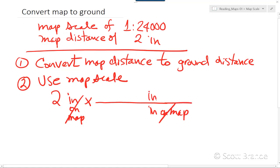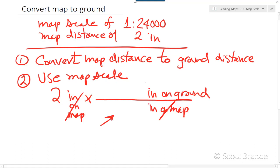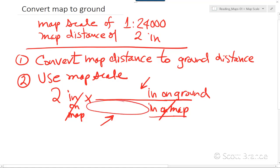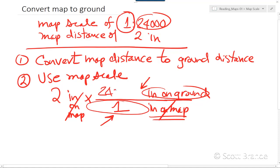What goes in the numerator of the fraction is the inches on the ground, given by the fractional scale. You don't have a choice about what numbers go in the numerator and denominator — you must match the number with the units already there. The inches on the map are represented by the 1 in the fractional scale, and the inches on the ground are represented by the 24,000 of the fractional scale.